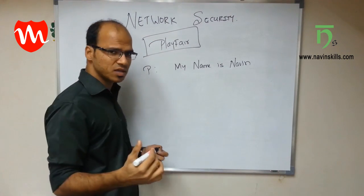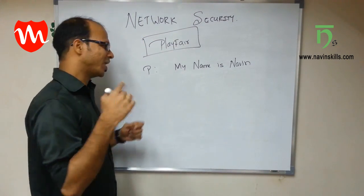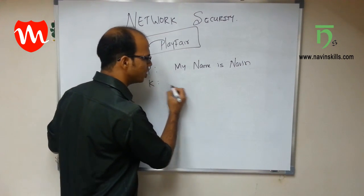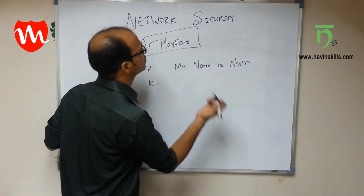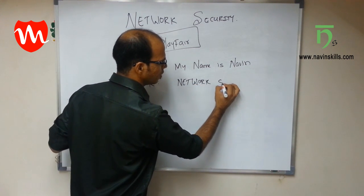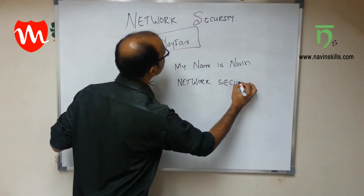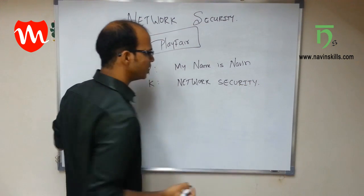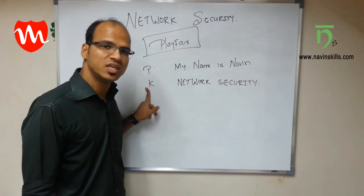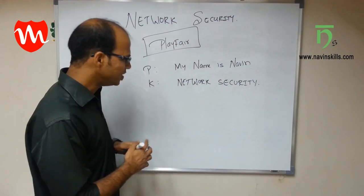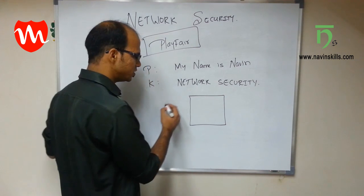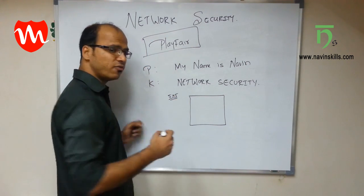To implement Playfair, the steps are: first, get your plain text; next, go for your keyword. Let's use the subject name — network security. So I have two things: the plain text and the keyword. To implement the next step, create a matrix of five by five.